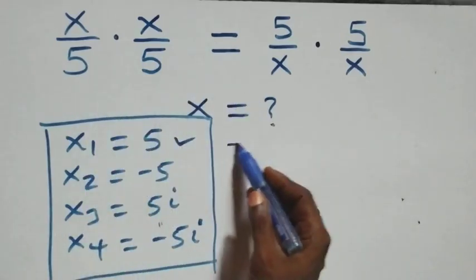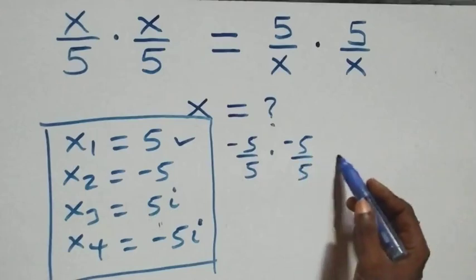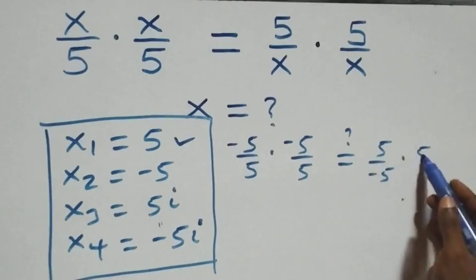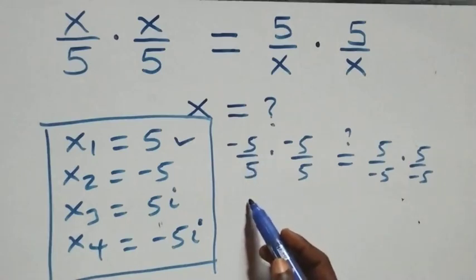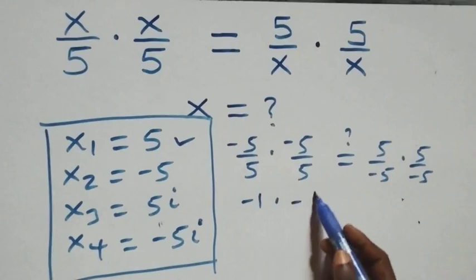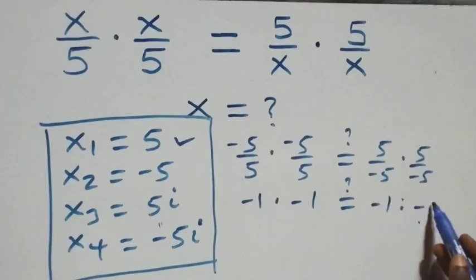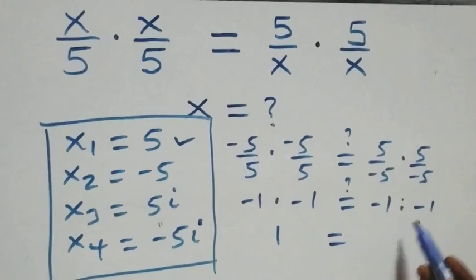Also for x equals minus 5, we substitute back: (-5/5) times (-5/5) times (-5/5) equals (5/-5) times (5/-5). Here -5/5 equals -1, so (-1)×(-1)×(-1) gives +1 on the left... wait, (-1)×(-1) gives +1. Left hand side equals right hand side, so x equals minus 5 satisfies the given problem.